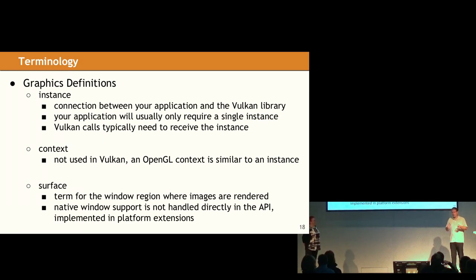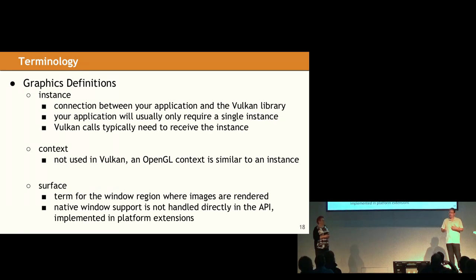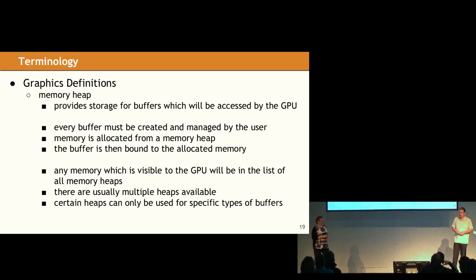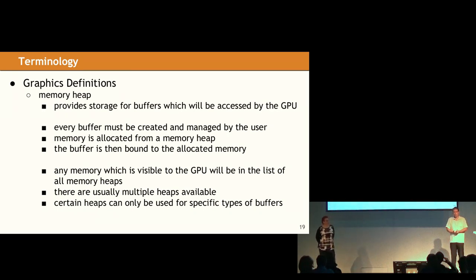So let's start at the very beginning of a Vulkan program. The first thing you do is create an instance — this is actually a handle that you allocate at the very beginning. This is the connection between your application and the Vulkan library or driver on your platform. And every other call that you will make uses either the instance or something derived from the instance. Usually you only need one of these. It's kind of similar to the context that was in OpenGL, except the context isn't actually an object — it's just sort of implicit in the OpenGL API. You will also need a surface — a place on the screen where your output will show up. And since that's very platform specific, there's a set of platform specific extensions shipped with Vulkan.